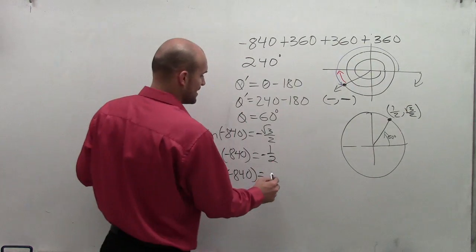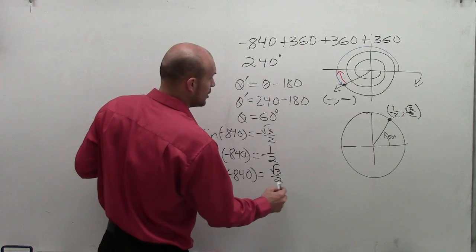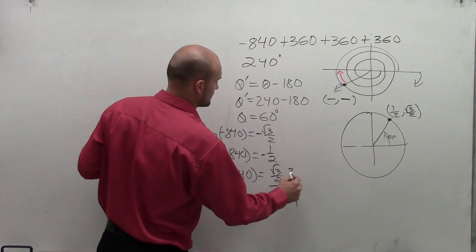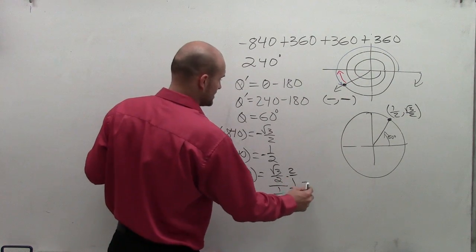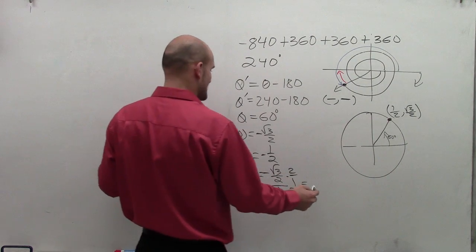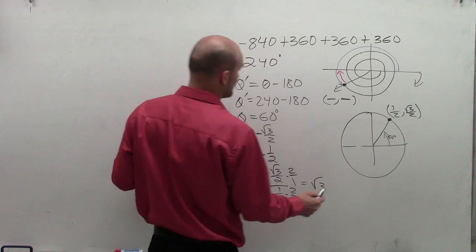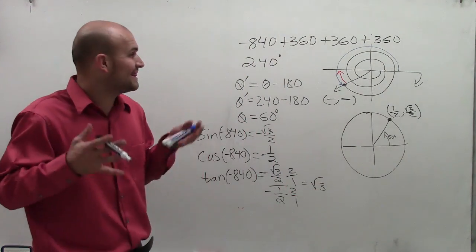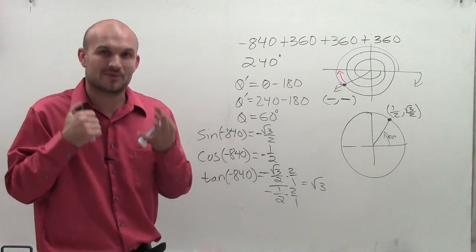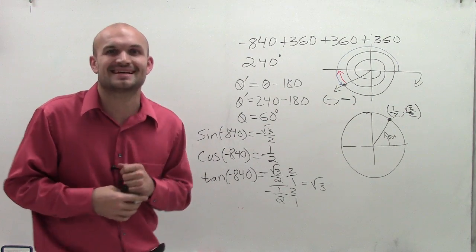And then we go ahead and look at our tangent of negative 840 degrees. And we're looking at a tangent. Remember, we have the y-coordinate over the x-coordinate, multiplied by our reciprocals. And what we end up with is, sorry, those are both negative. So therefore, we end up with a positive square root of 3. So there you go, ladies and gentlemen. That's how you evaluate for the sine, cosine, and tangent of negative 840 degrees with coterminal and reference angles. Thanks.